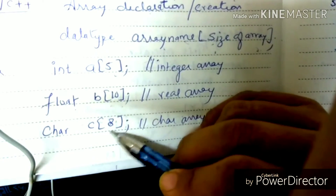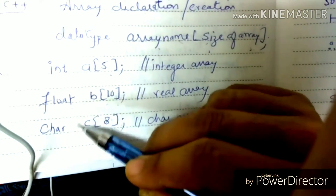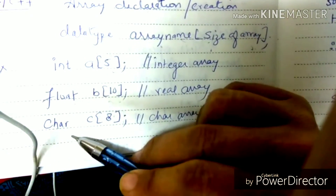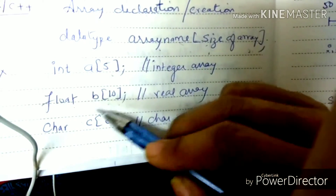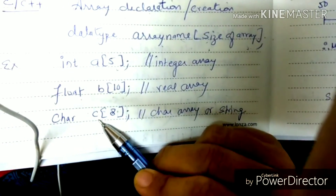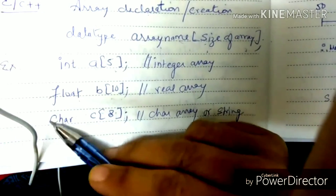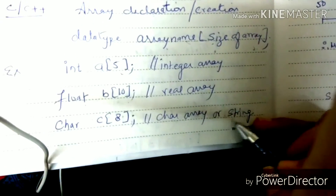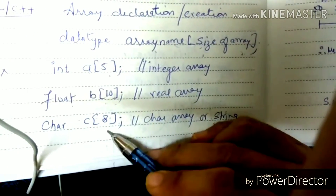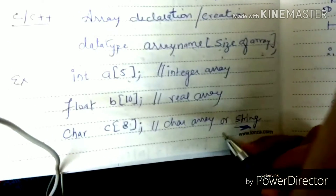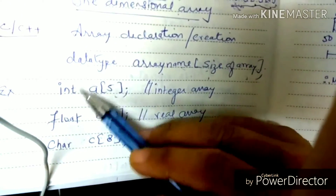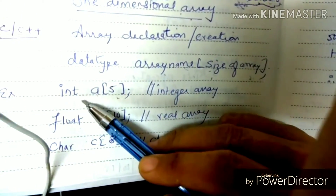We store float data type in C and C++. If we have to store 8 characters, we write char C[8]. We have to store 8 characters — we create a character array. The character array is called a string. A collection of characters, an array of characters, we call a string.